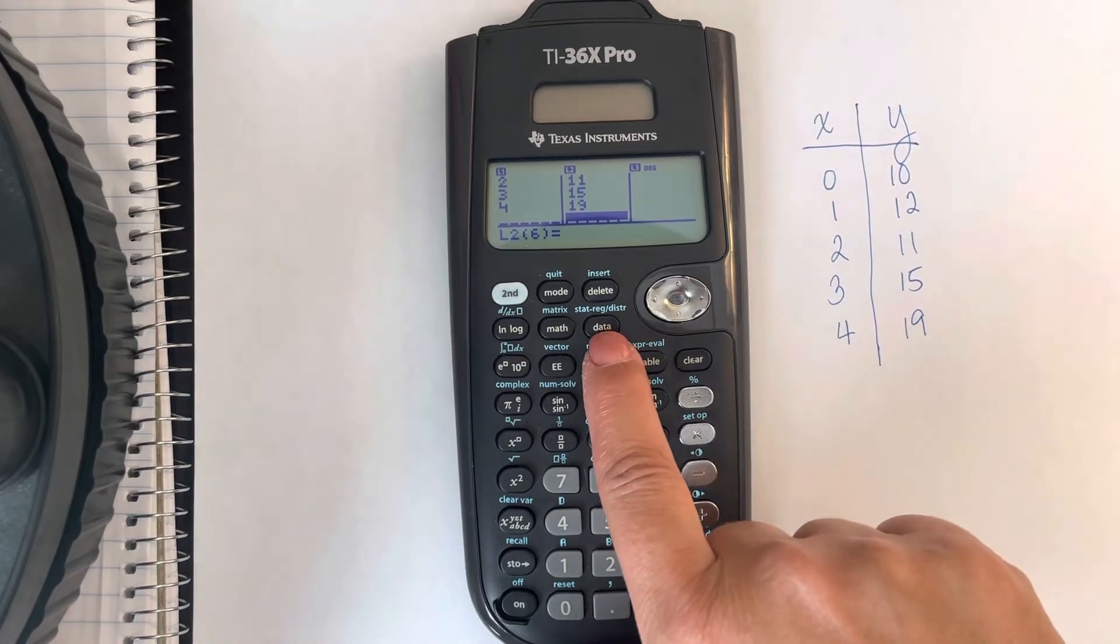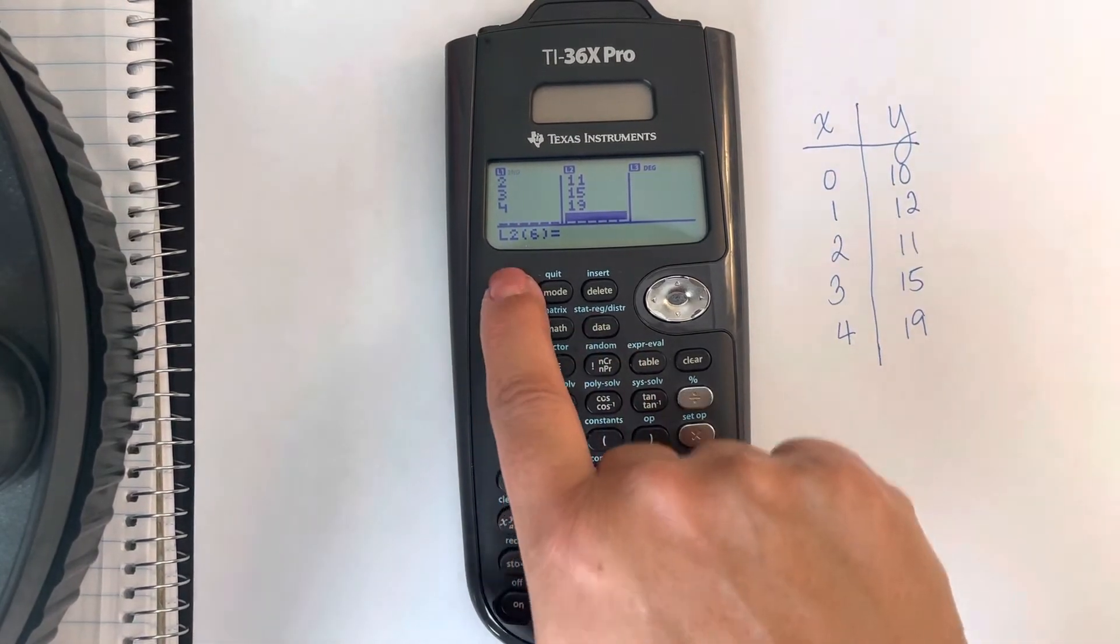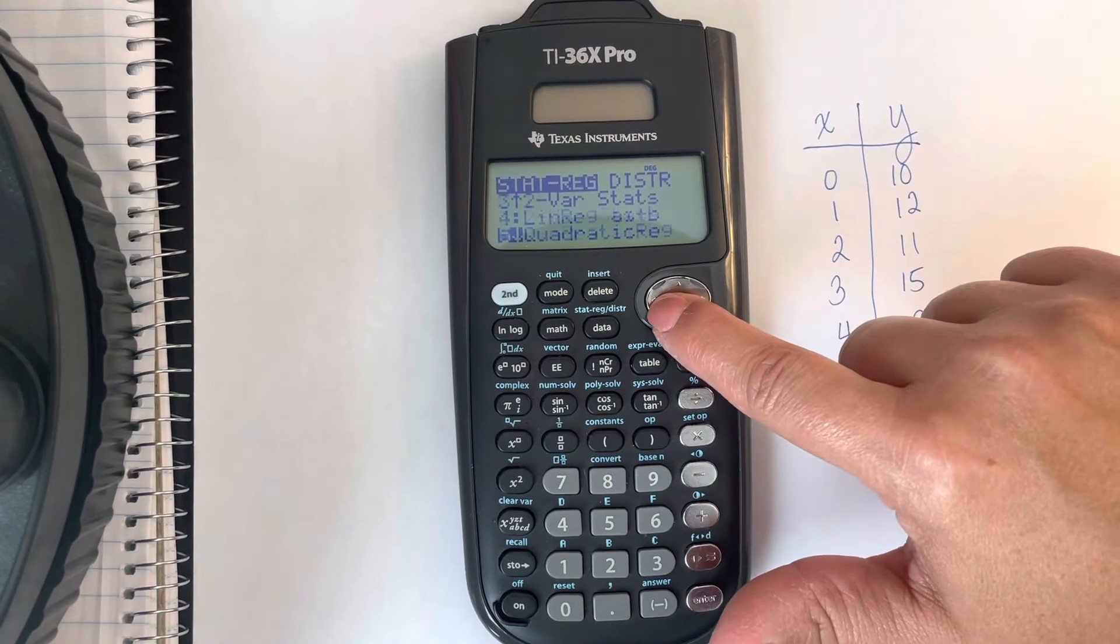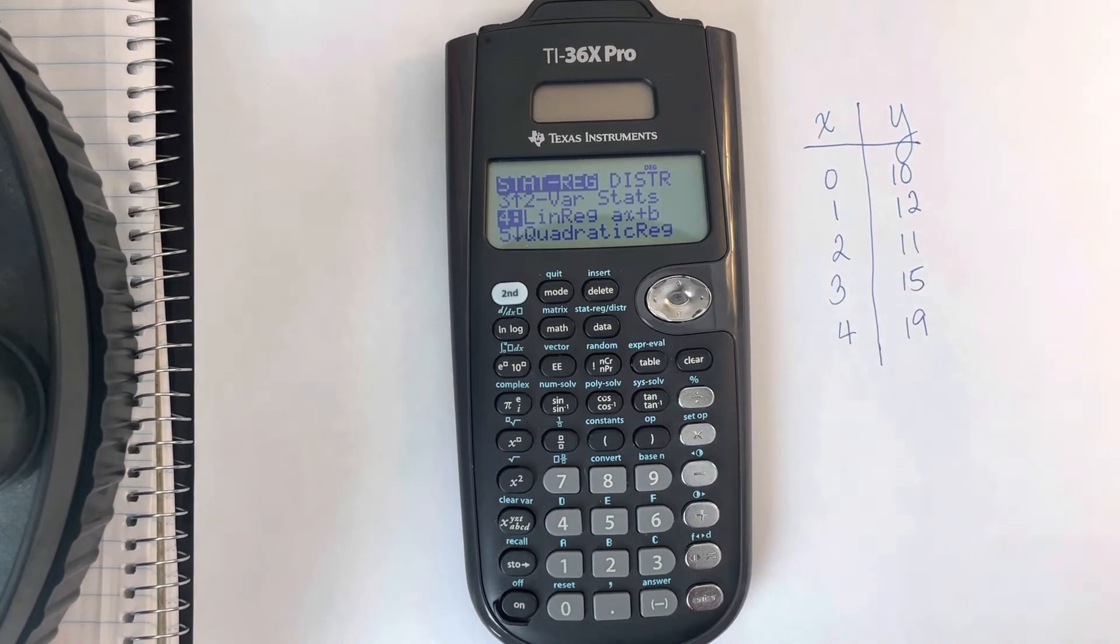Now we're going to run the regression command which is second and data and we're going to scroll down to where it says Linear Regression AX plus B.